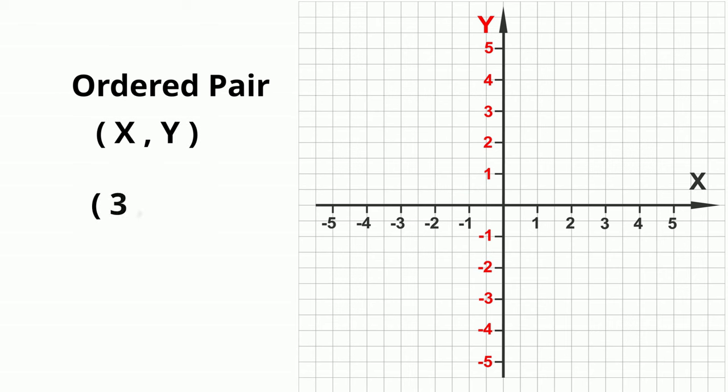Let's plot the point 3, 4. It is located 3 units to the right of the origin 1-2-3 and then up from the origin 1-2-3-4.